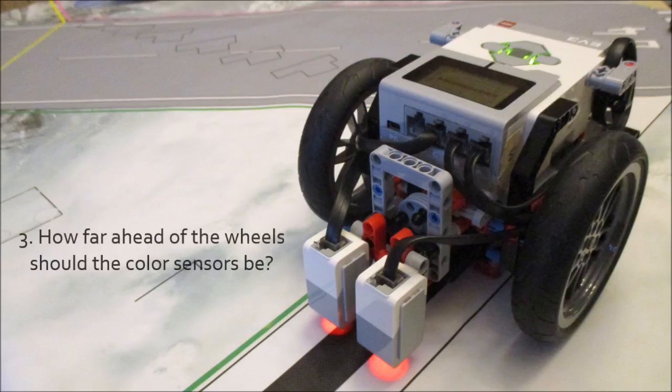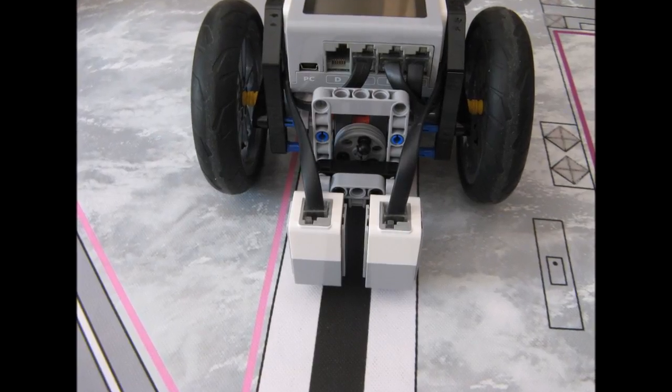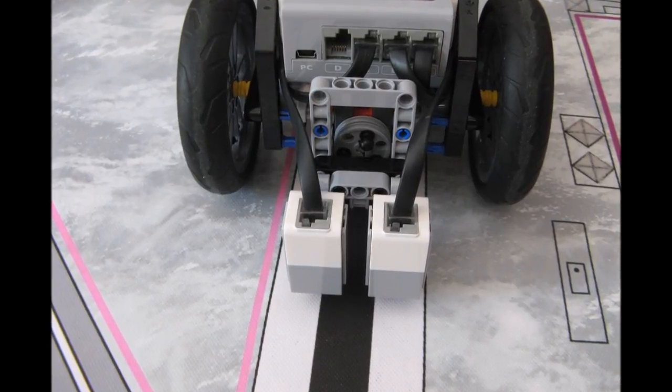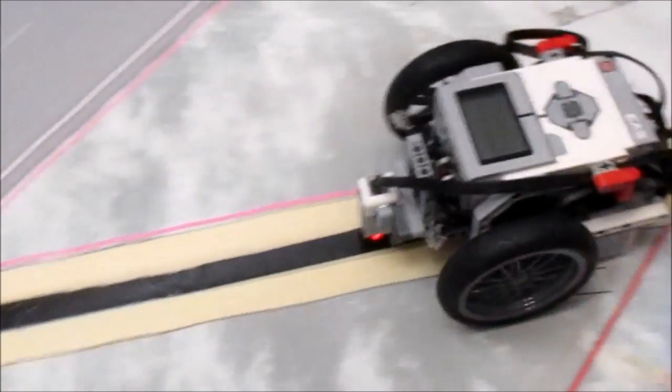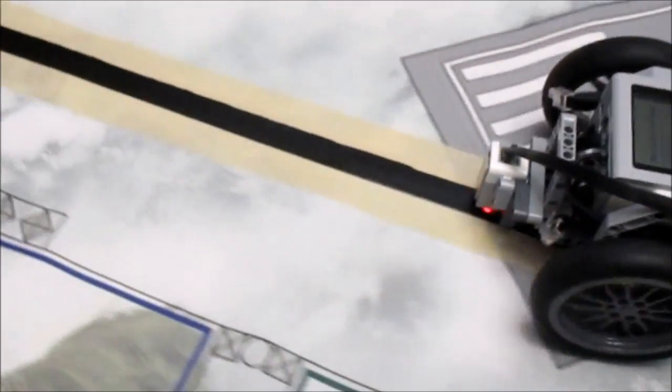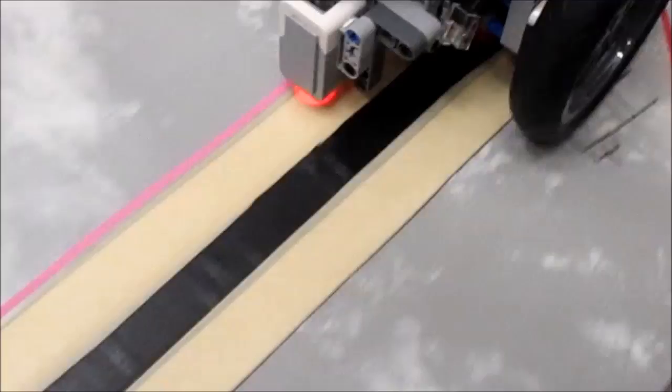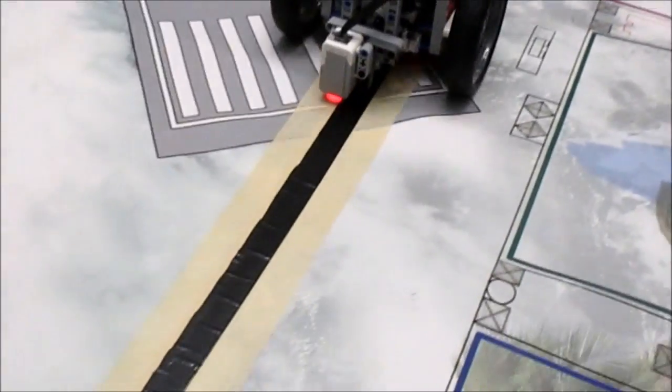Now we know that our color sensors must go ahead of the drive wheels, but exactly how far ahead should they be? This comes down to personal opinion or your robot design. As a general rule of thumb, if you move your sensors farther away from the drive wheels—that is, put more distance between your drive wheels and the color sensor—your robot's line following will be a little more stable.